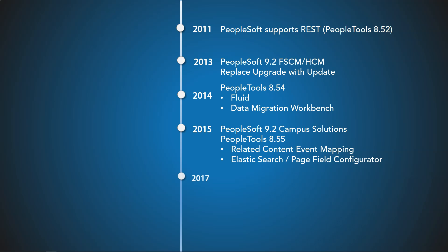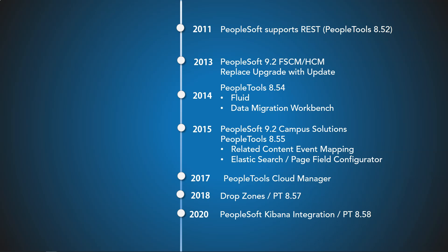In 2017, with PeopleTools 8.57, Oracle released Cloud Manager, allowing customers to move their on-premise PeopleSoft environment to Oracle Cloud — called Lift and Shift — and quickly create PeopleSoft environments. In 2018, also with PeopleTools 8.57, Drop Zones was released, enabling the addition of custom fields on a page without logging into App Designer, just through configuration. Similarly to Page Field Configurator, you can quickly enhance applications without migrating any App Designer objects. With PeopleTools 8.58, PeopleSoft also integrated with Kibana, an open-source visualization tool to run advanced analytics on PeopleSoft data.